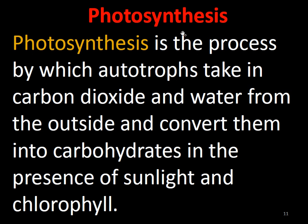Autotrophic organisms prepare food by a process called photosynthesis. 'Photo' means light and 'synthesis' means to produce, so photosynthesis is the production of food with the help of light. Autotropes take in CO₂ and water from the outside environment and convert them into carbohydrates — specifically glucose — in the presence of sunlight and chlorophyll. Only during daytime in the presence of sunlight will they produce food.